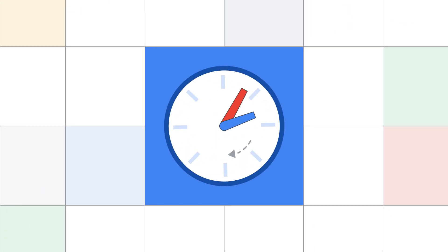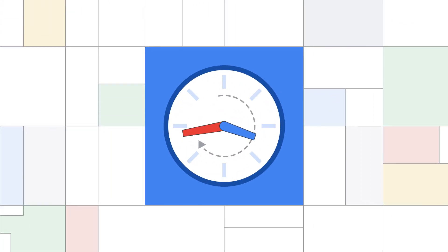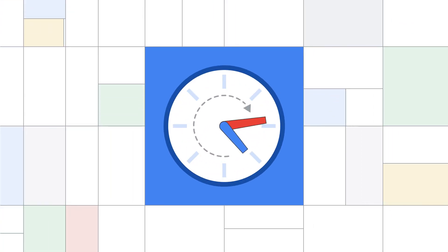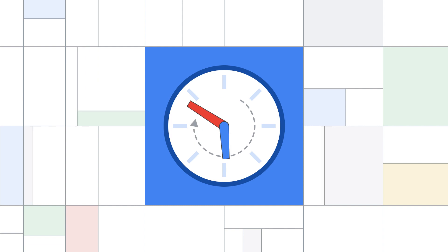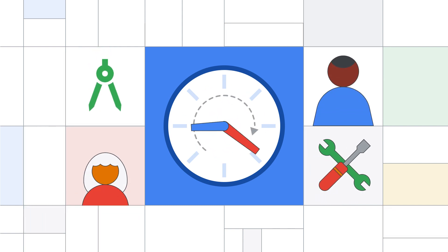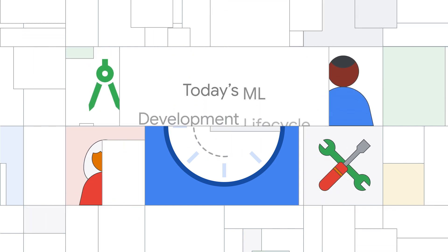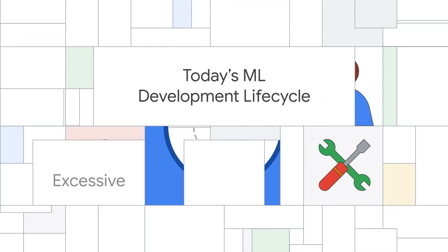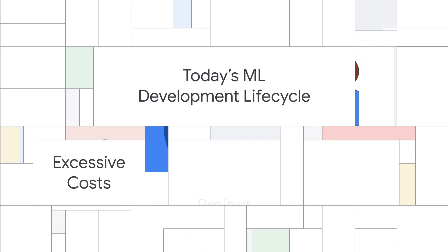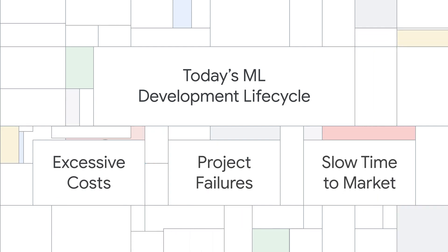Scaling AI, machine learning, and Python often involves developers stitching together various tools and frameworks, requiring more handoffs. Studies have shown this leads to excessive costs, project failures, and slow time to market.